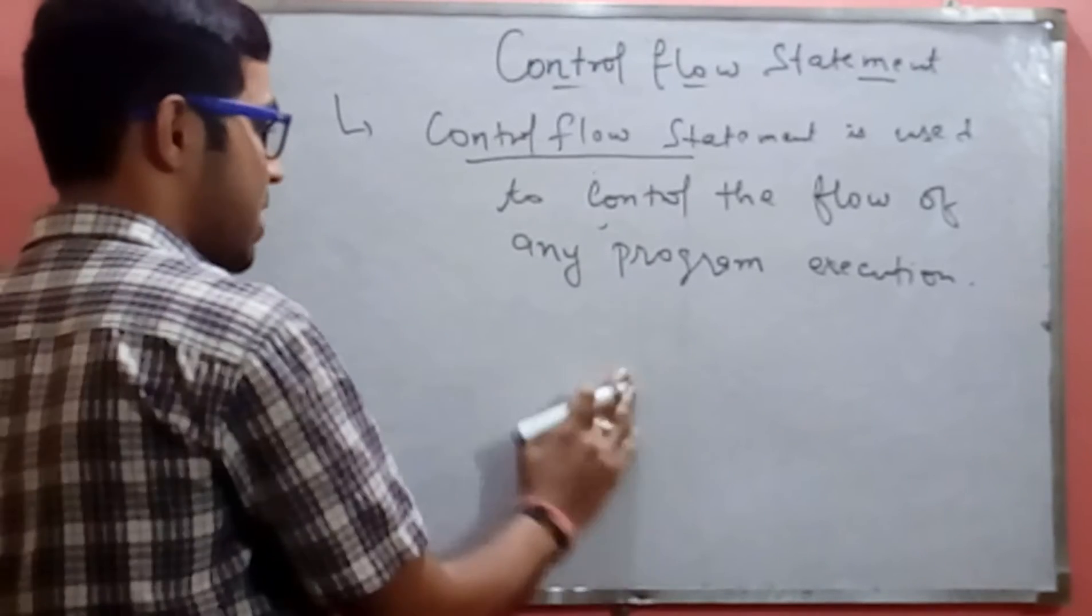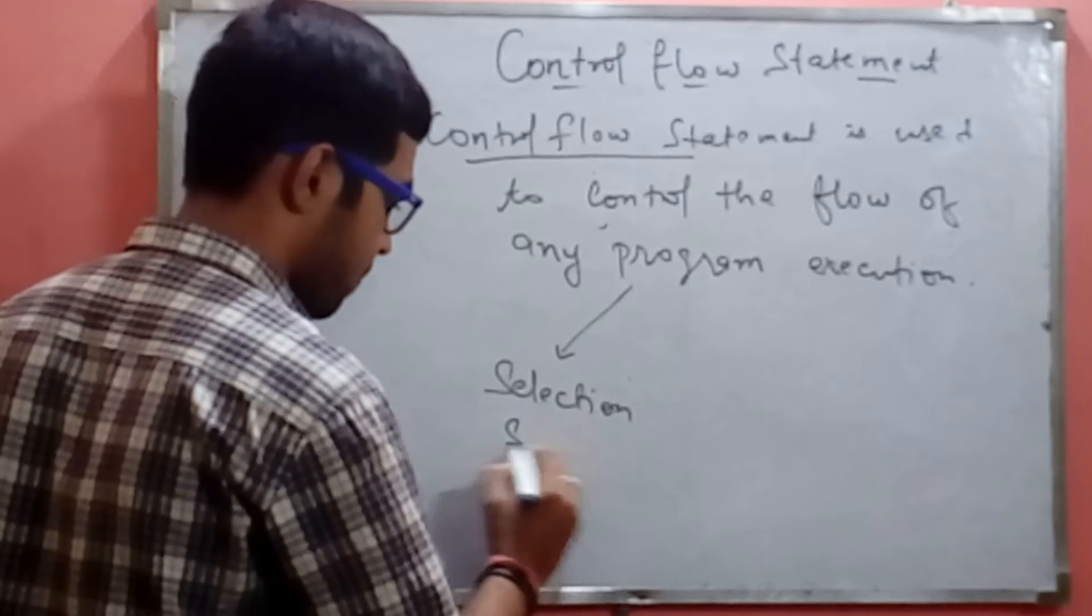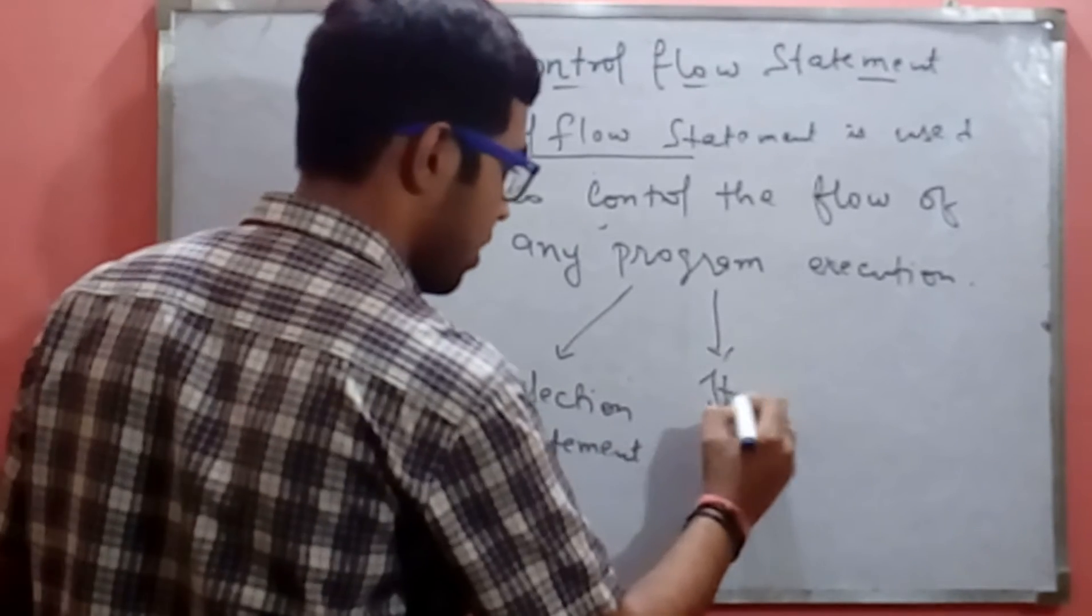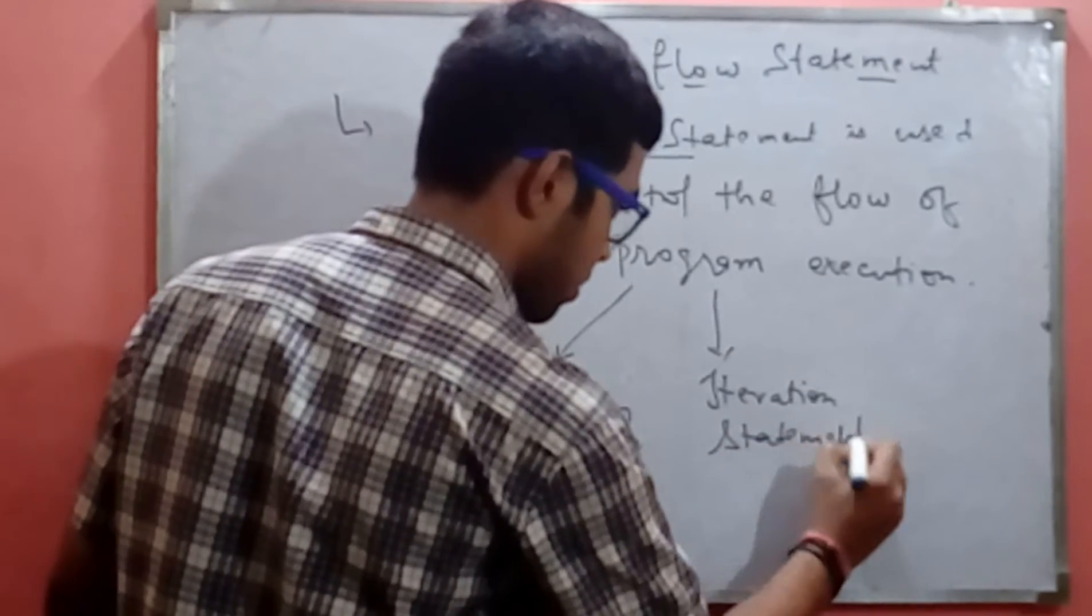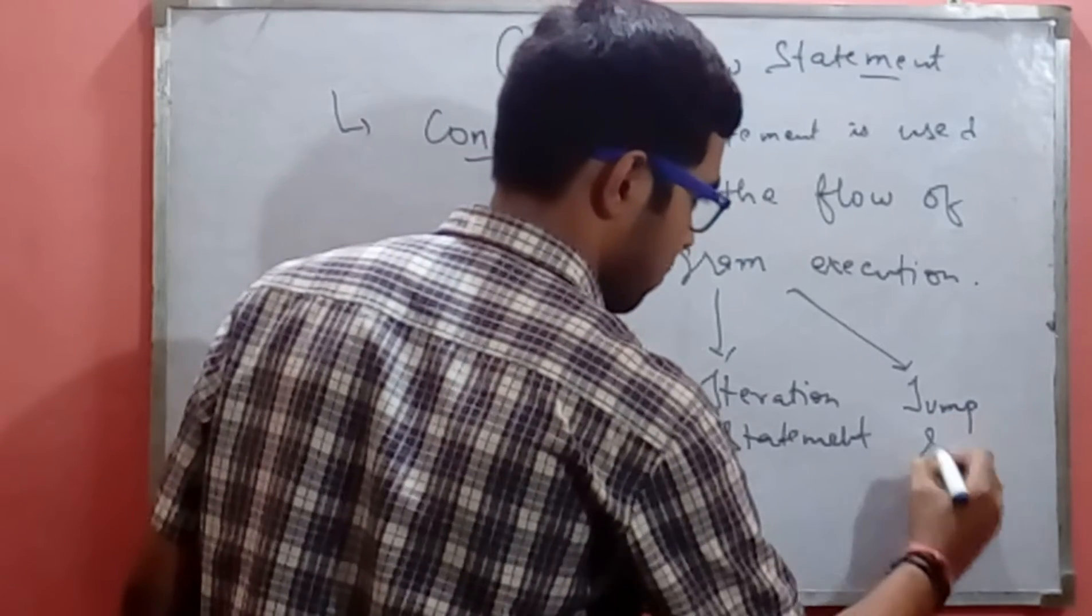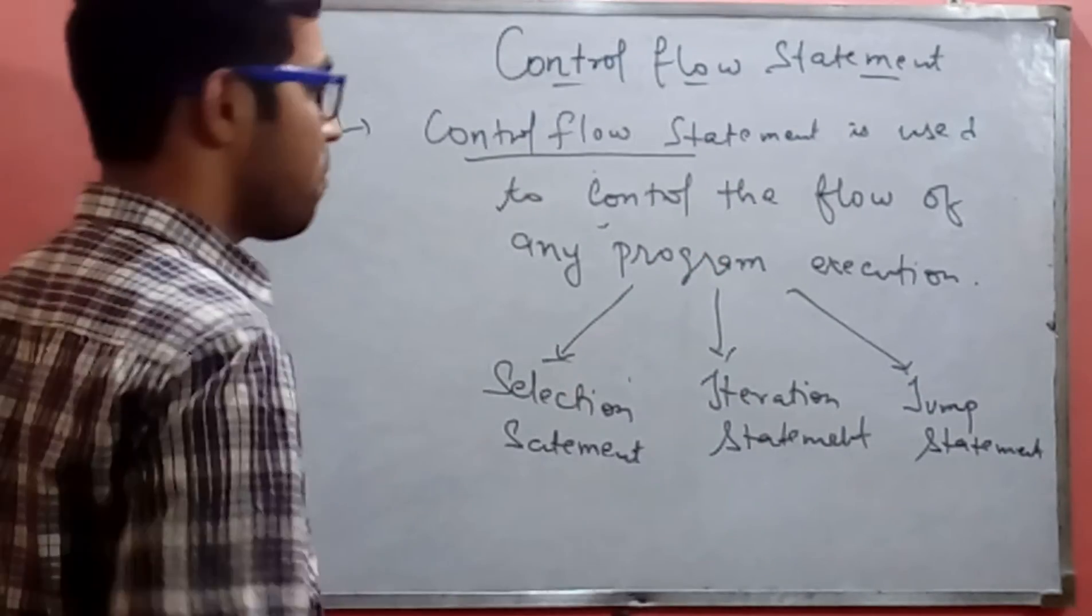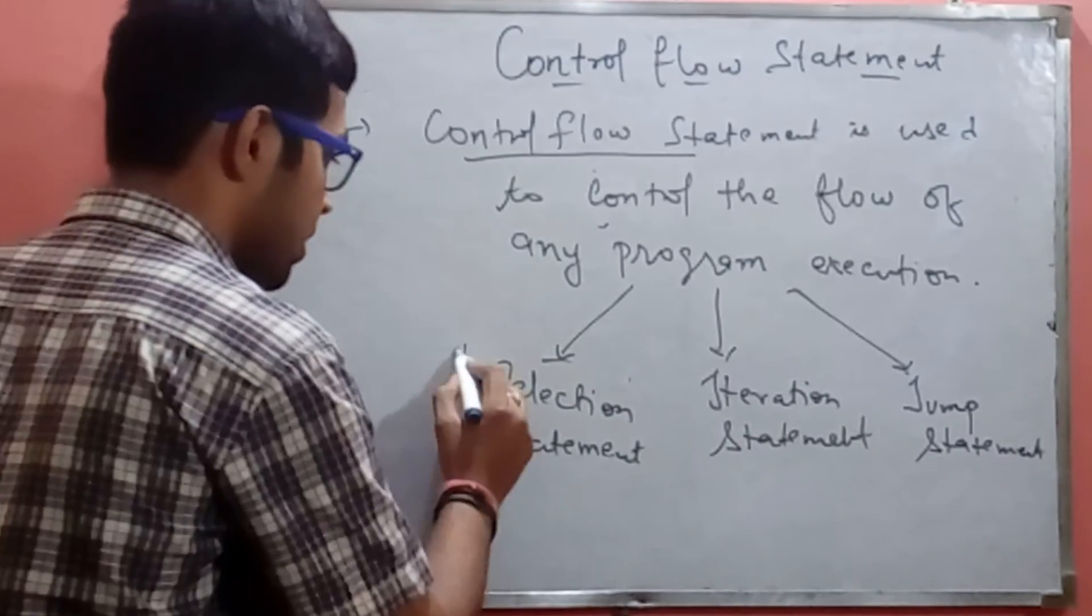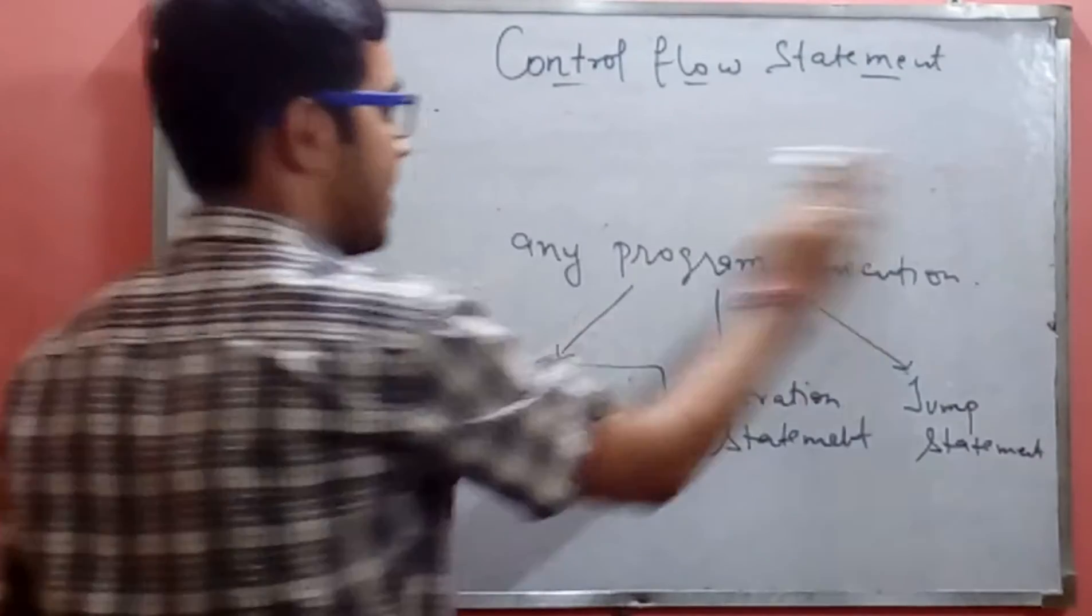There are basically three types of control flow statement. First one is selection statement, second one is iteration statement, and last one is jump statement. These are the three control flow statements in C programming language. Now today I will teach you the first one, selection statement.